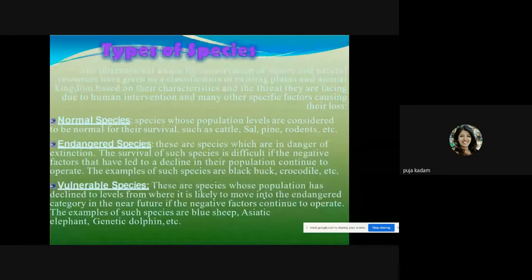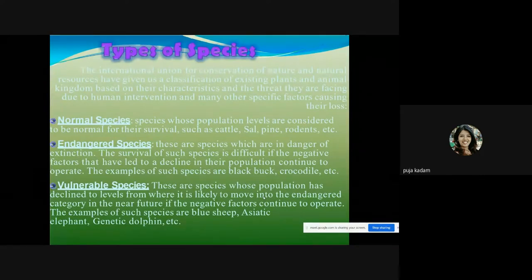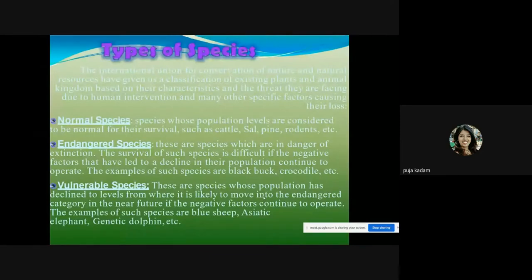Normal species are those whose population levels are considered normal for their survival — they are not on the verge of extinction. Examples include cattle, sal pine, and rodents. Endangered species are those in danger of extinction whose survival is difficult if the negative factors causing their decline continue to operate.